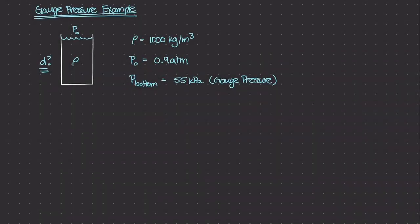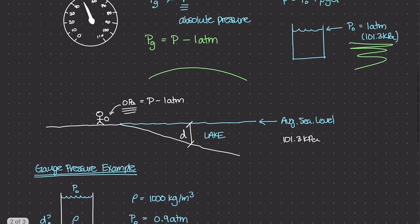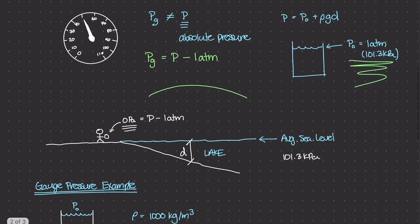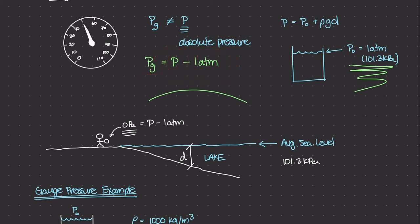Let's do an example on gauge pressure to really understand the gauge pressure equation, which is your absolute pressure P minus one standard atmospheric pressure.